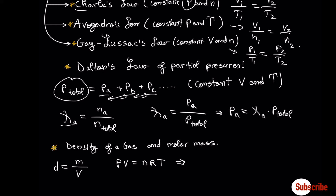We also have the mole fraction, which is the number of moles of an individual gas divided by the total number of moles of gases present. This can also be expressed in terms of pressures: the pressure of an individual gas divided by the total pressure. We can write this mathematically as well.